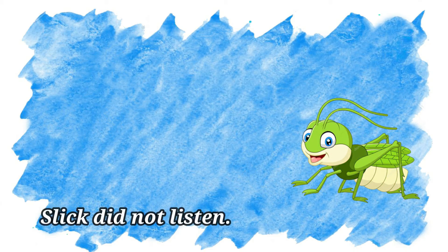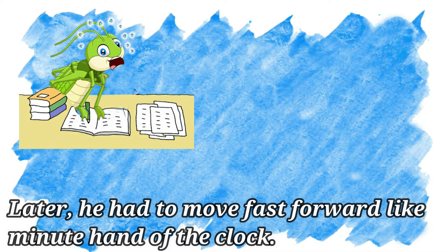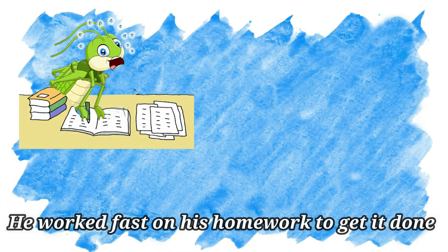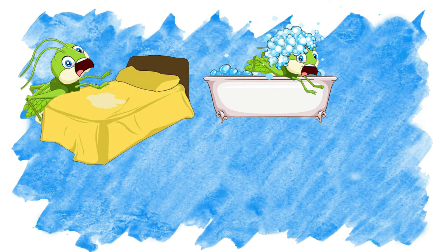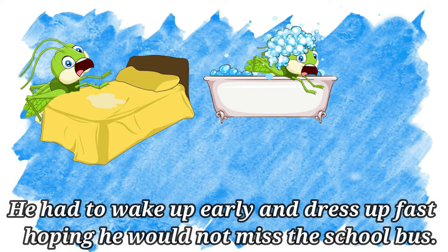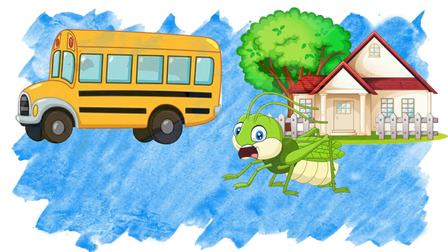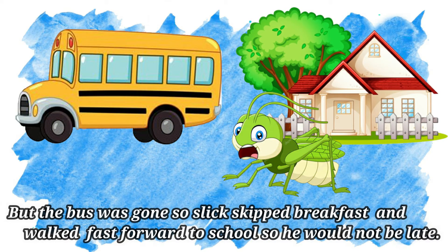Slick did not listen. Later, he had to move fast forward like the minute hand of the clock. He worked fast on his homework to get it done. He had to get up early and dress up fast, hoping he would not miss the school bus. But the bus was gone, so Slick skipped breakfast and walked fast forward to school so he would not be late.